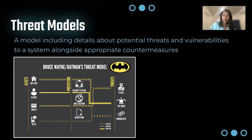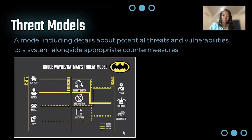Let's talk a little bit about threat models. A threat model is a model including details about potential threats and vulnerabilities to a system alongside appropriate countermeasures. A common example I like to use is Batman's threat model. You can see here it lists out all his assets — Batcave, Alfred, emails, texts — and then it lists out the threats: the police, Joker, and journalists. And then you see countermeasures: security system, hidden location, encryption. It shows the relationship between what he wants to protect, the mitigation, countermeasures, and the threats, marking the relationship using lines and the degree of risk.